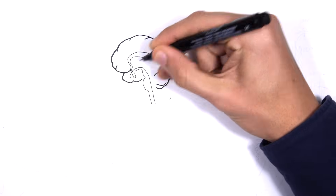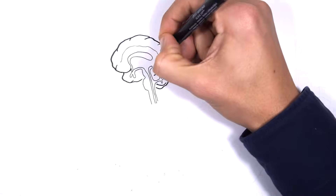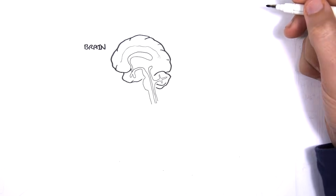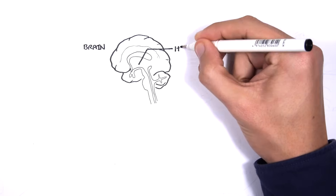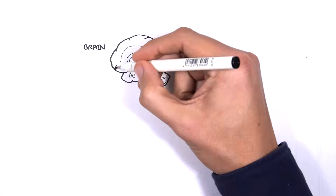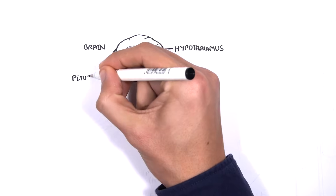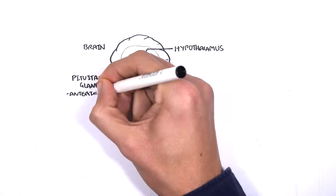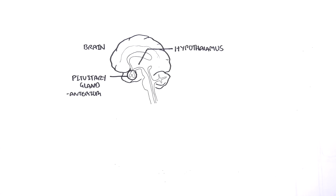The brain consists of structures that are very important in regulating the hormones in our body. The hypothalamus is the main regulator. The pituitary gland, which sits below the hypothalamus, is made up of the anterior and posterior lobes, and these are also important endocrine glands. Here we will mainly focus on the anterior pituitary gland, because we are talking about the adrenal gland and its hormones.